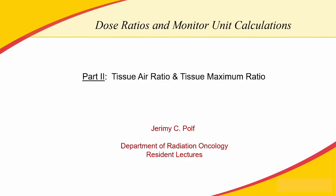Hello everybody and welcome to part two of our video series on dose ratios and monitor unit calculations in radiotherapy. Today we will be talking about two additional types of dose output ratios, namely the tissue air ratio and tissue maximum ratio. These are extensions of the concepts we talked about in part one of this series. If you haven't seen part one yet I would suggest you go back and watch it first, but if you have, let's get started.